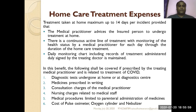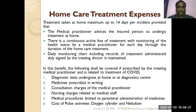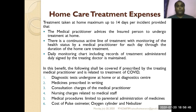Nursing charges will be given for medical staff if required. Medical procedures are limited to parenteral administration of medicines. In case of comorbidities, treatment will be given, but medicines for those comorbid conditions will not be covered under home care treatment. Additionally, the cost of a pulse oximeter, oxygen cylinder, and nebulizer are covered under home care treatment expenses up to the sum insured, since these devices are not available at home.